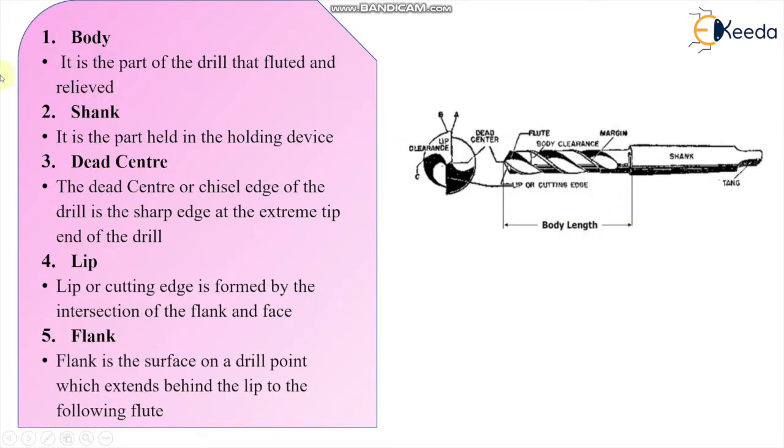See here, the body. This is the body of the drill. It is the part of the drill that is fluted and relieved. The body is the fluted part, and then we can see here the flutes. Then the shank, definitely this part is going to be held in the holding device, this is the shank. Then we have the dead center, this is here, the extreme tip. Dead center or chisel edge of the drill is the sharp edge at the extreme tip, end of the tip, this is the dead center.